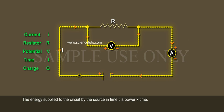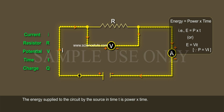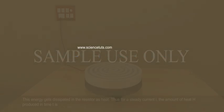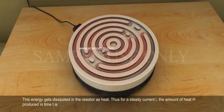The energy supplied to the circuit by the source in time T is power multiplied by time. That is, E = P × T, or E = VIT, since P = VI. This energy gets dissipated in the resistor as heat.